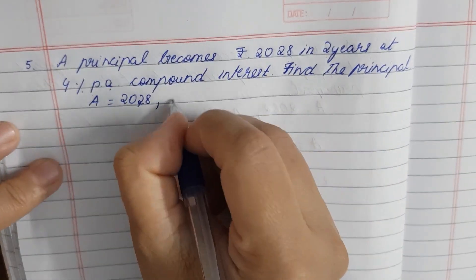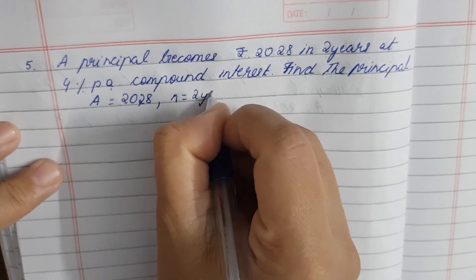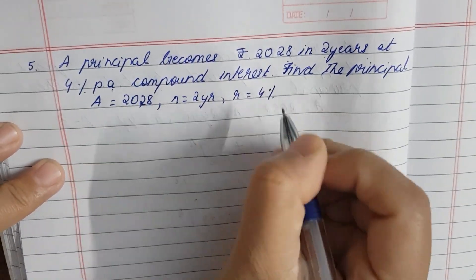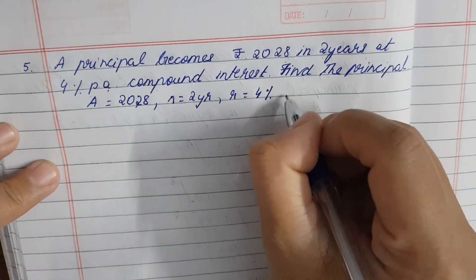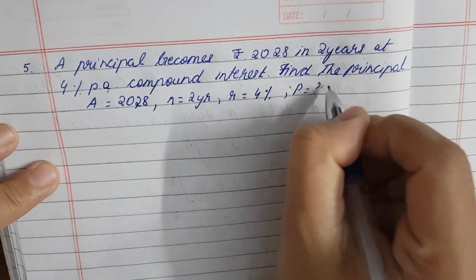We call the number of years 2 years. The rate of interest is 4% per annum. And principle number is unknown. So we will take it as P only.